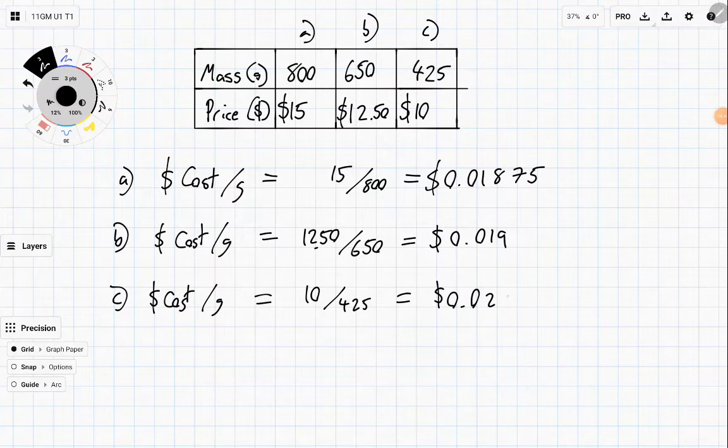Now notice, if we had rounded each of these to two decimal places, we actually would have gotten the same answer for all of them. Because this one rounded to two decimal places is 0.02. This one rounded to two decimal places is 0.02. And this one rounded to two decimal places is 0.02. Yet, they are not all equally the same. So sometimes just be careful about rounding because sometimes it will cloud your answers.